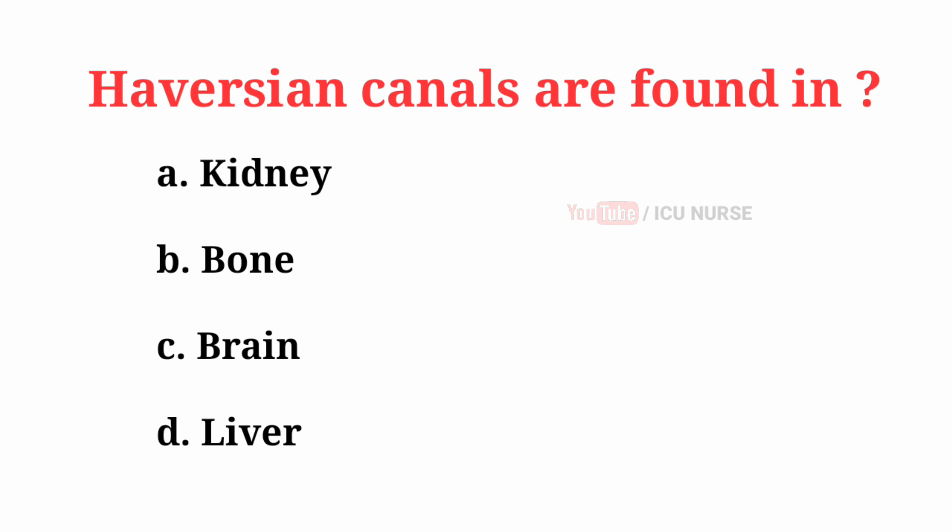Haversian canals are found in — the correct answer is B: Bone.